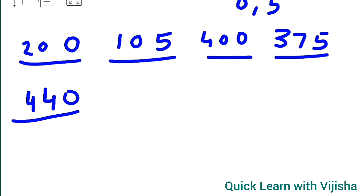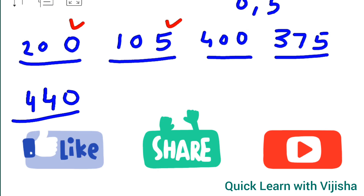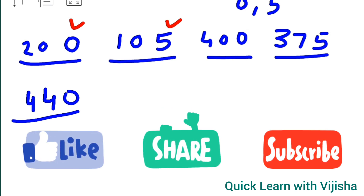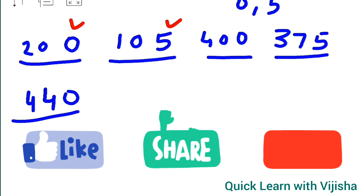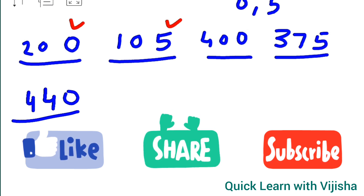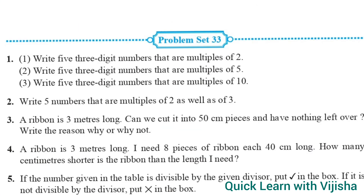The basic thing here is that the units place matters — it should be 0 or 5. I hope you are understanding, children. If you find my video helpful, don't forget to hit the like button and share it with your friends so they can also understand the concept clearly.